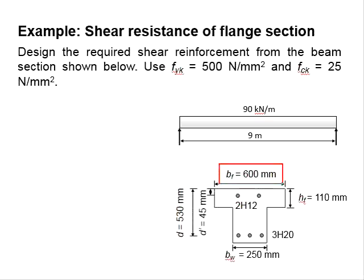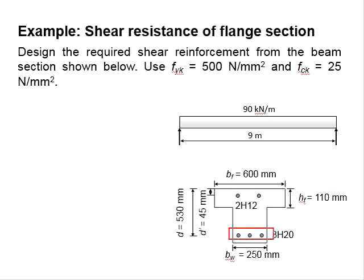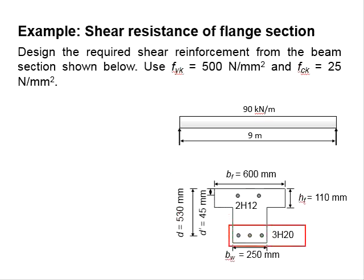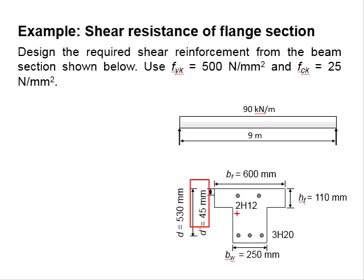The flange has a width of 600 mm and the web has a width of 250 mm. The thickness of the flange is 110 mm. There are 3 H20 bars given as tension reinforcement and 2 H12 as compression reinforcement bars. The depth to the tension reinforcement is 530 mm and the depth to the compression bar is 45 mm.